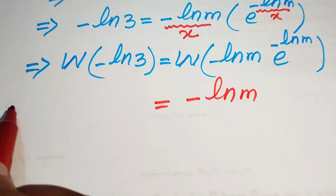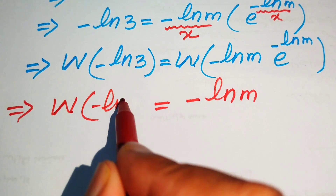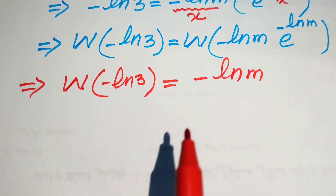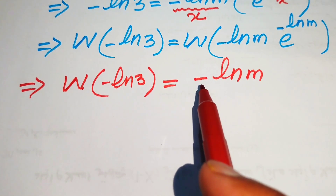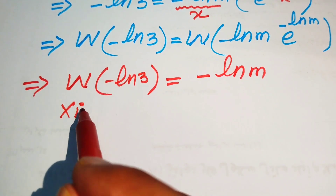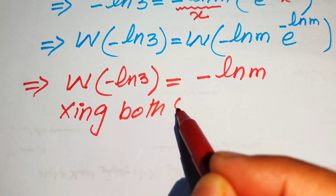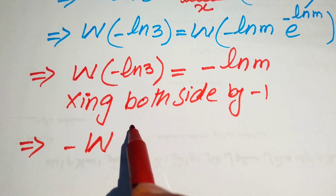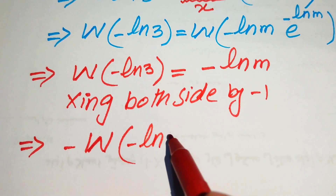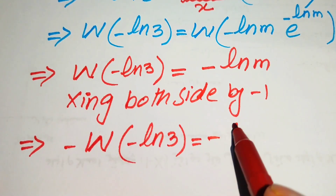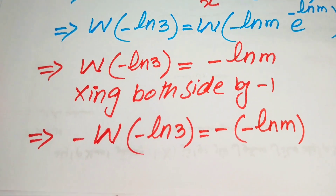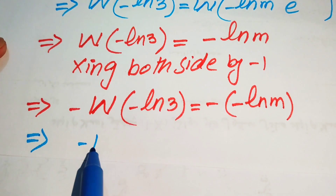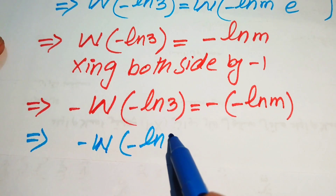On the left-hand side we have W of minus log 3. Since we need to find m, we remove the negative sign by multiplying both sides by minus 1, giving minus W of minus log 3 equals log m.